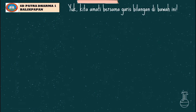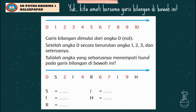Yuk kita amati bersama garis bilangan di bawah ini. Garis bilangan dimulai dari angka 0, setelah angka 0 secara berurutan angka 1, 2, 3, dan seterusnya. Tulislah angka yang seharusnya menempati huruf pada garis bilangan berikut. Nah anak-anak, di sini ada huruf S, L, R, I, dan H.